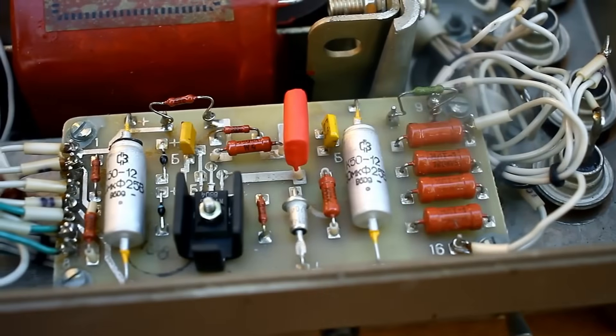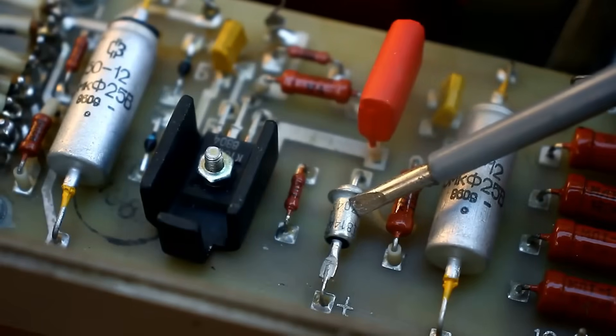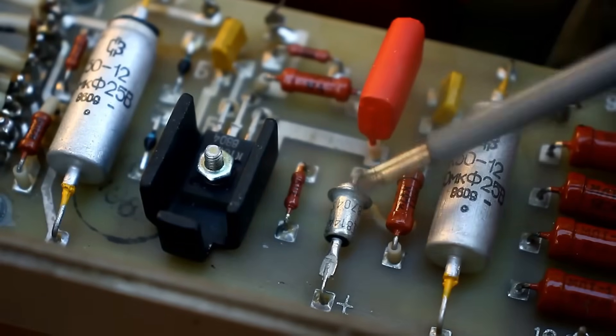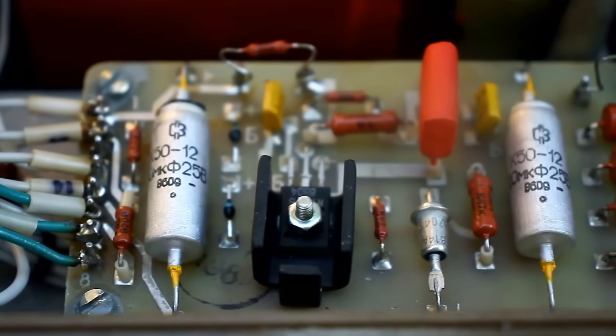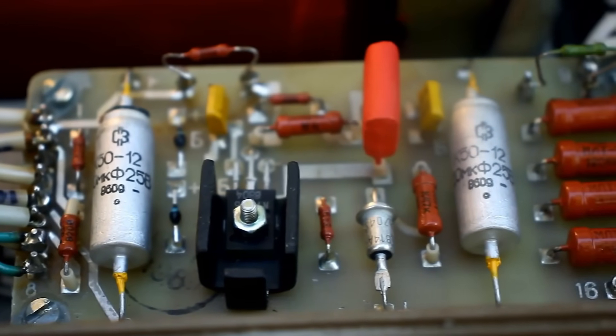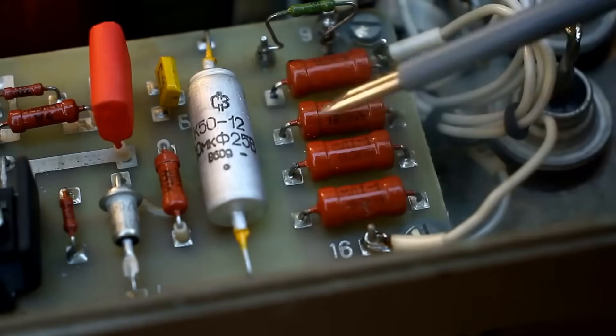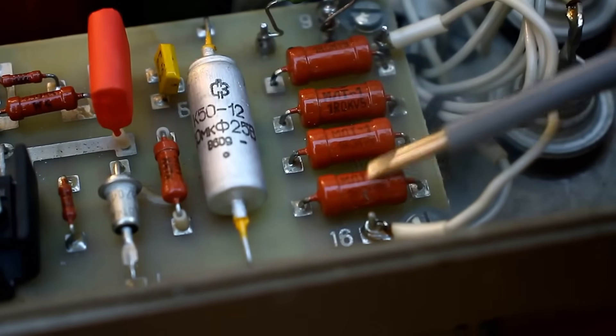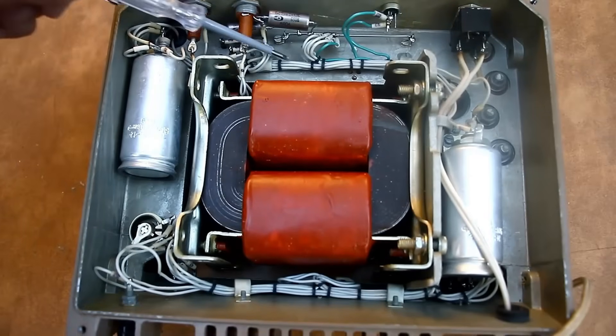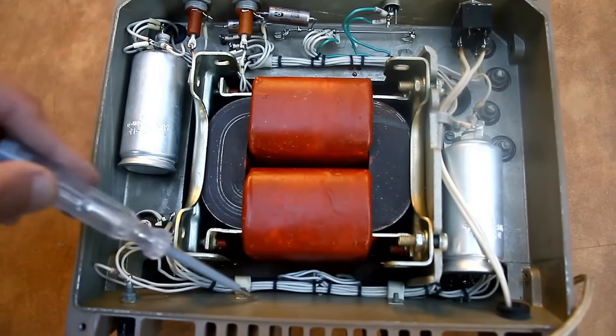The control is built on the second board. Reference voltage source, here it's simple, in the form of a regular Zener diode. Next are the amplification stages. The power supply is equipped with short circuit protection. Low resistance resistors connected in parallel are used as the current sensor. The wiring is neat. Everything is in threads. Overall, it's beautiful.